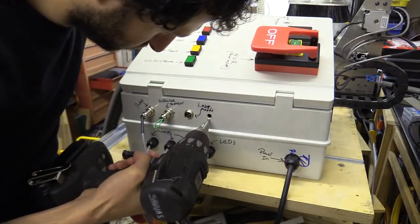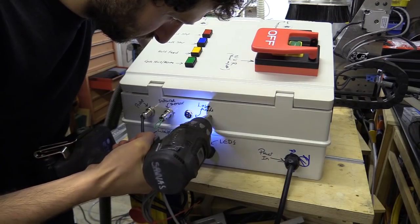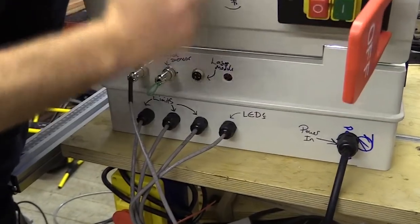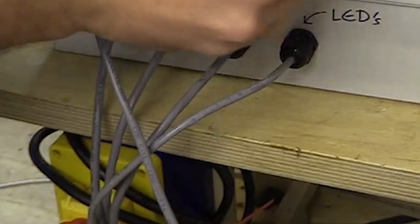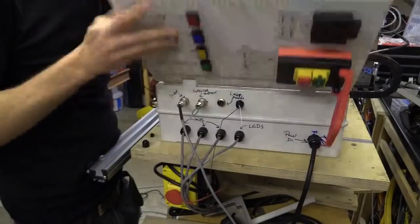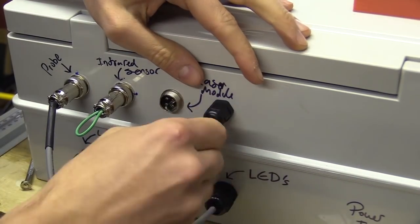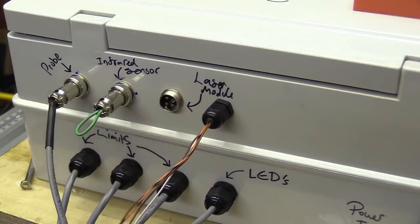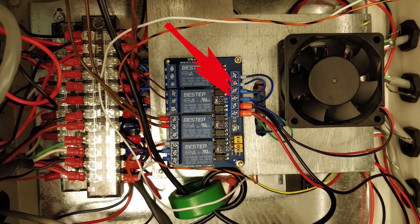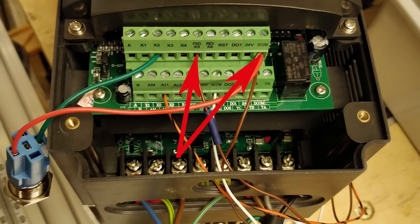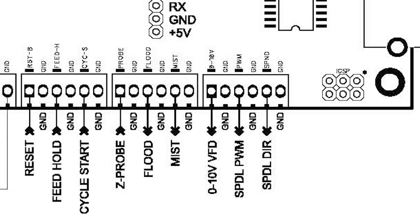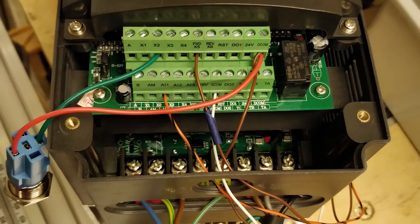I'm now temporarily wiring the frequency drive to the controller. Later I will place the drive in a separate enclosure with a detachable power and signal cable from the main controller enclosure. I'm connecting the spindle enable from the controller via a relay on the output relay module to the X5 and digital common terminals on the frequency drive. And the 0-10v signal again in the same way to the AI1 and analogue common terminals which control the spindle speed.